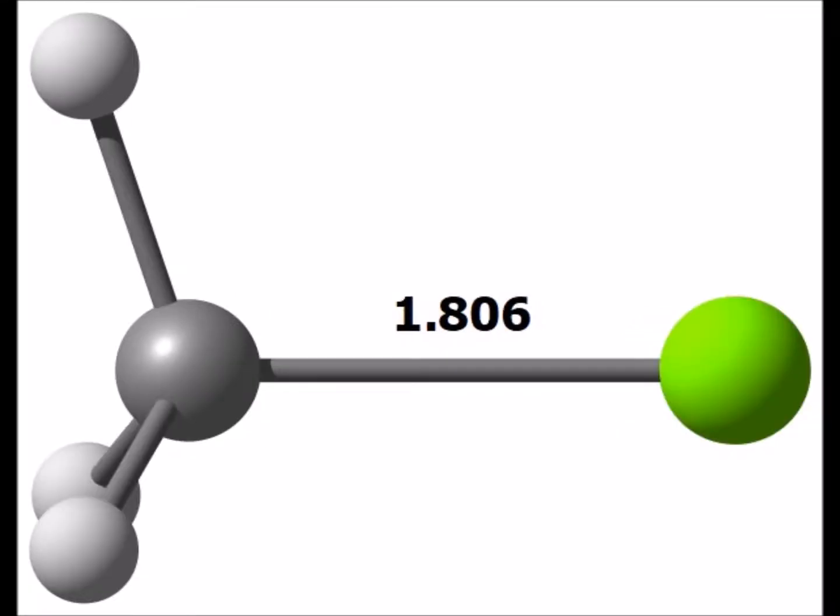Here is chloromethane, the chlorine atom in light green. The carbon-halogen bond in this molecule is 1.806 angstroms.